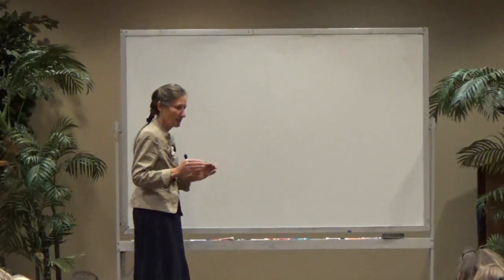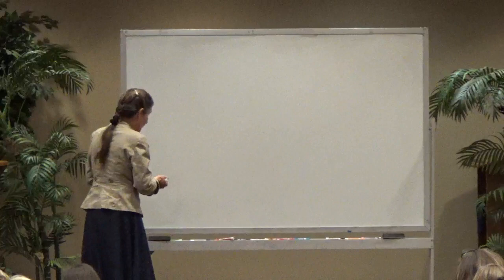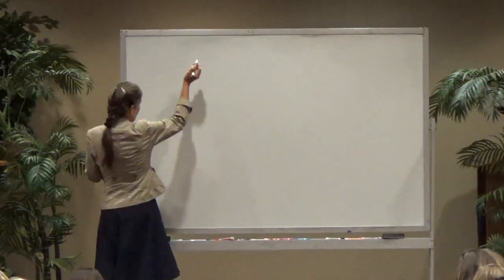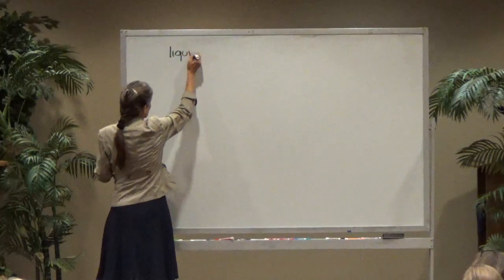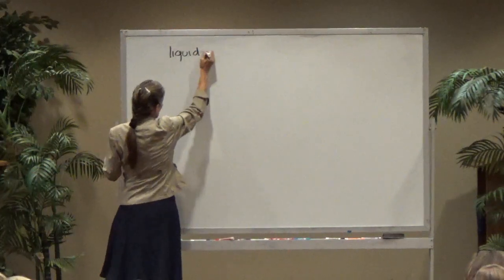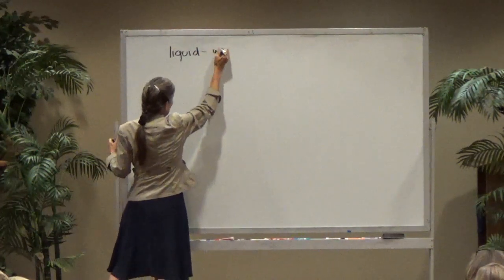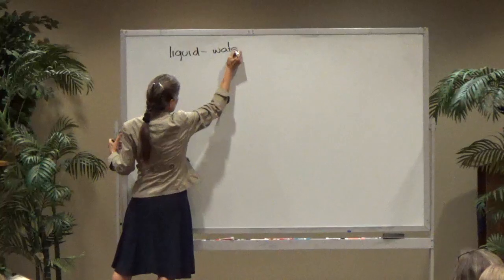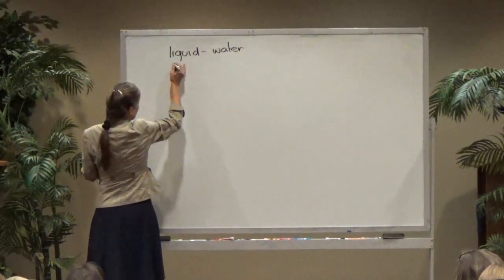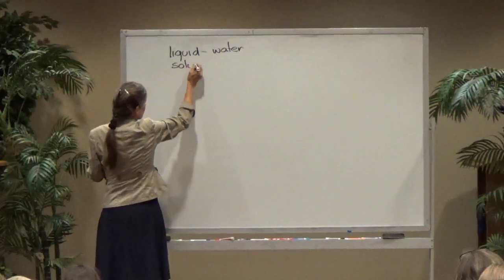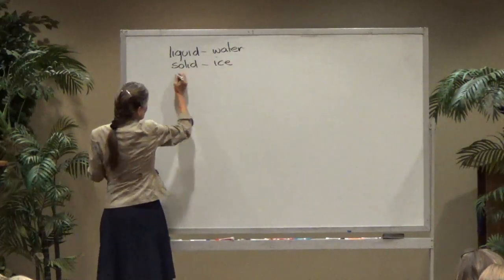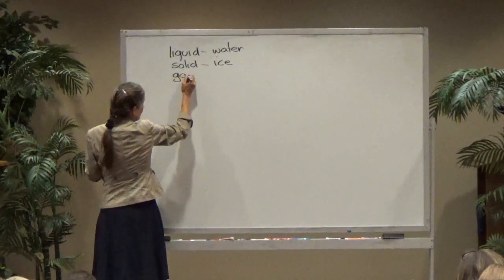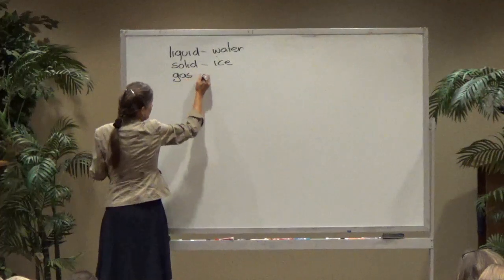First of all, we need to look at the properties of water — what it can do and how we can use it. Water can be used as a liquid, and that is water. It can be used as a solid, and the solid is ice. It can also be used in a gas form, and that gas form is steam.